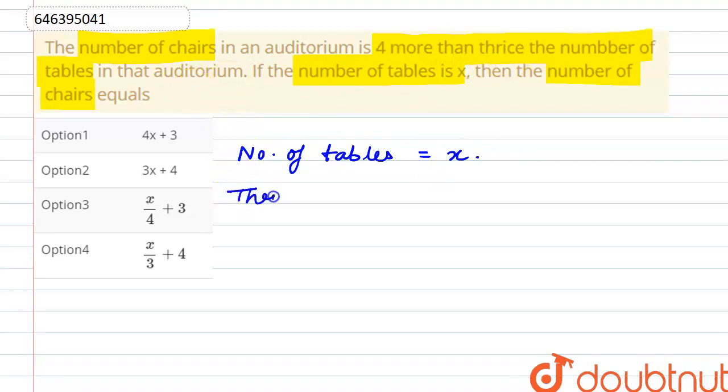So, how much is thrice number of tables? Thrice of number of tables, thrice means three times. So, what do we do with x? Three times multiplied, that means 3x.